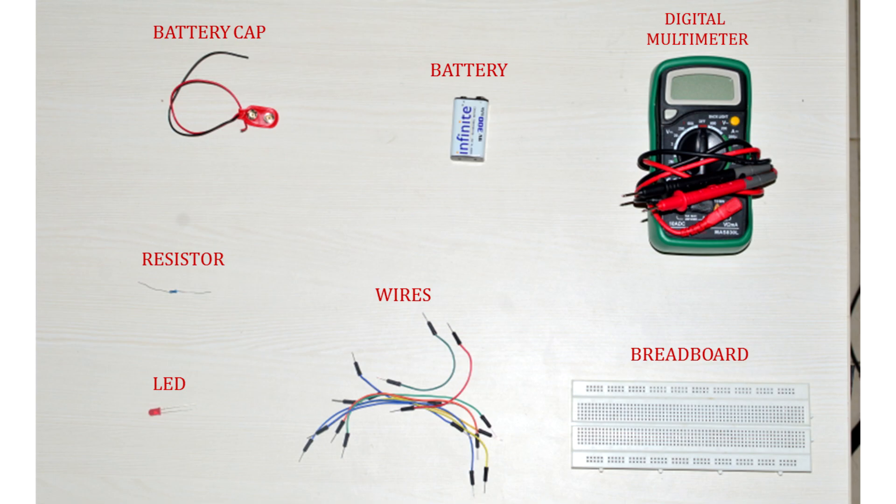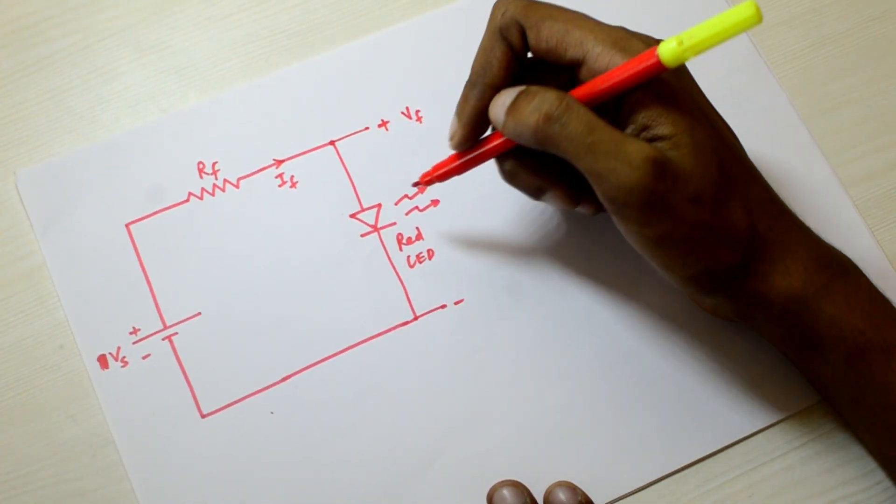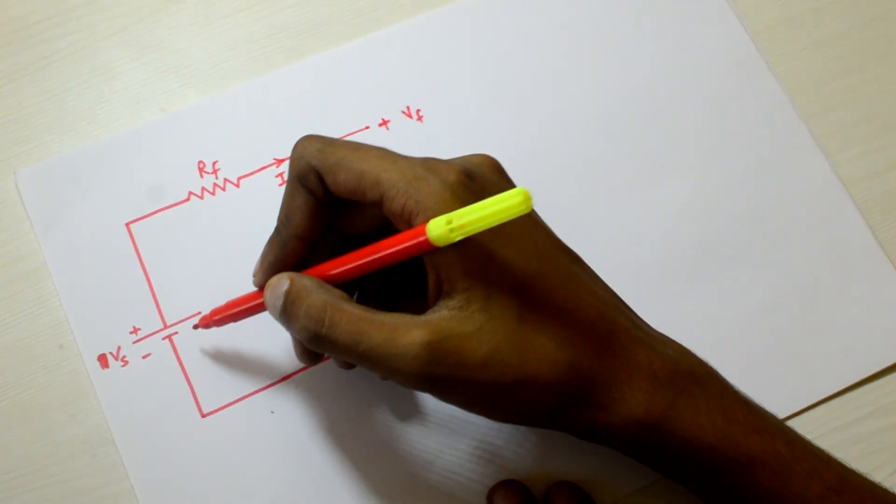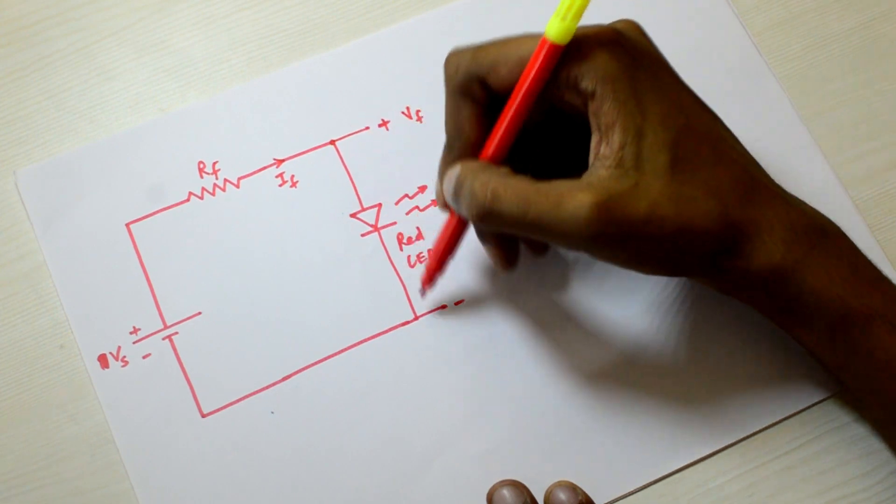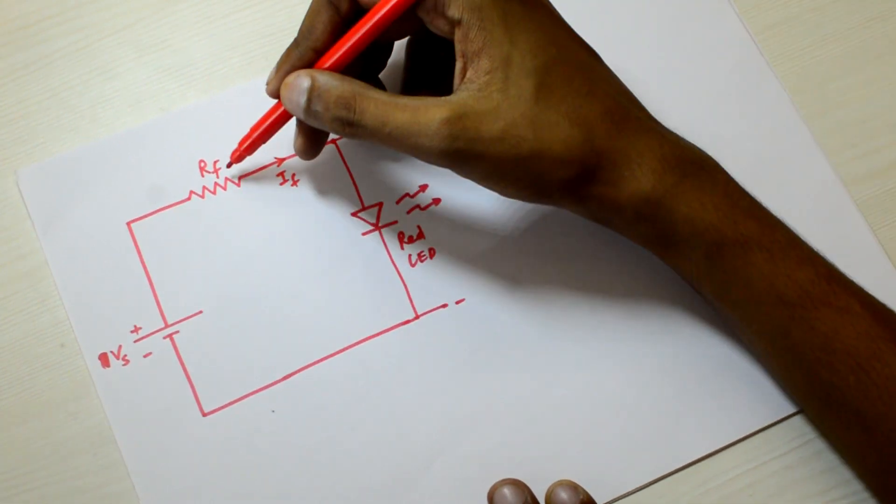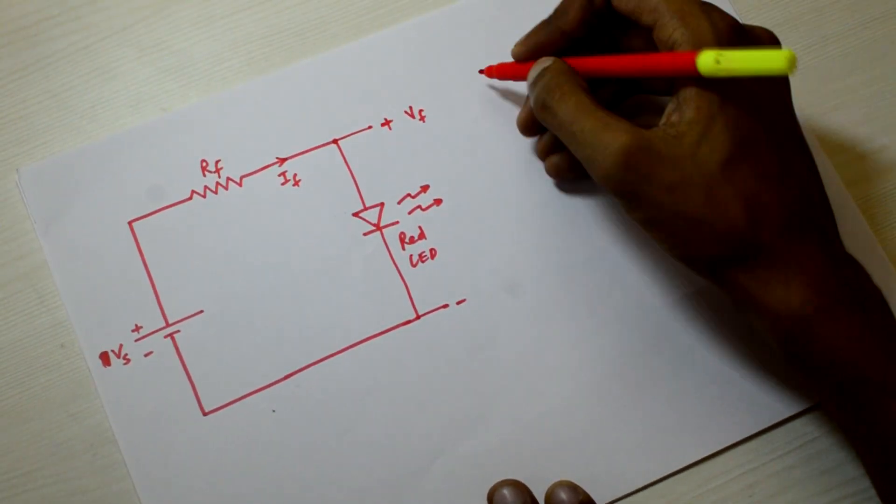This is the circuit on which we will be working today. We will try to glow an LED using a voltage source. We use the current limiting resistor to make sure high current doesn't flow through the LED. If you don't use the current limiting resistor, the LED will blow off.